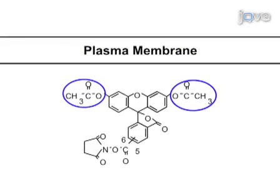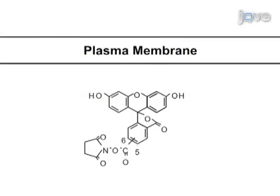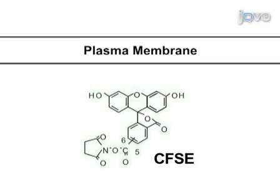The two acetyl groups allow the dye to rapidly enter cells. Within lymphocytes, esterases remove the acetyl groups from the CFDA-SE, forming the CFSE form of the dye. Without the acetyl groups, CFSE becomes fluorescent and is also less membrane permeant, thus concentrating the dye within cells.